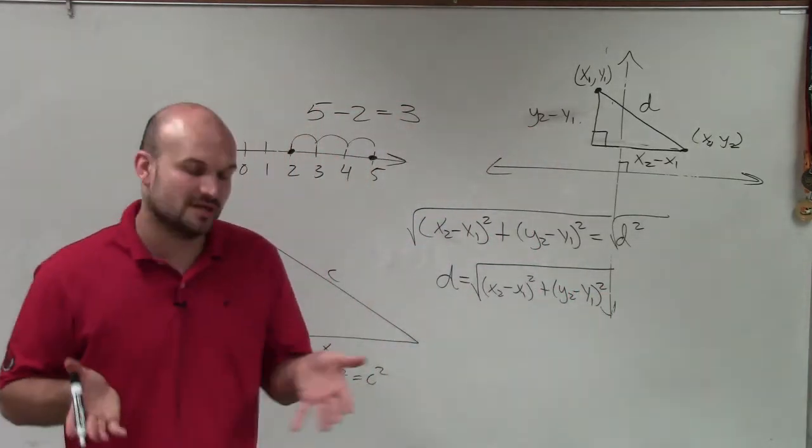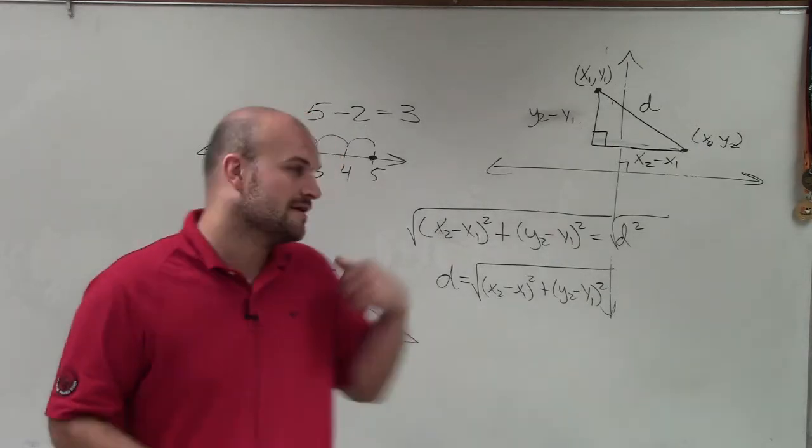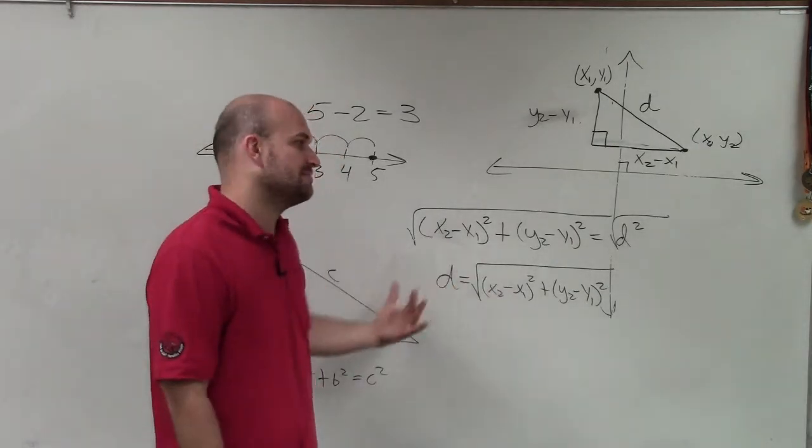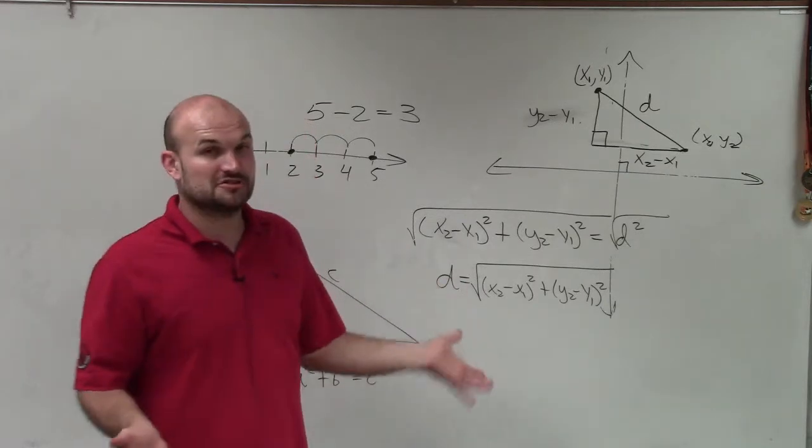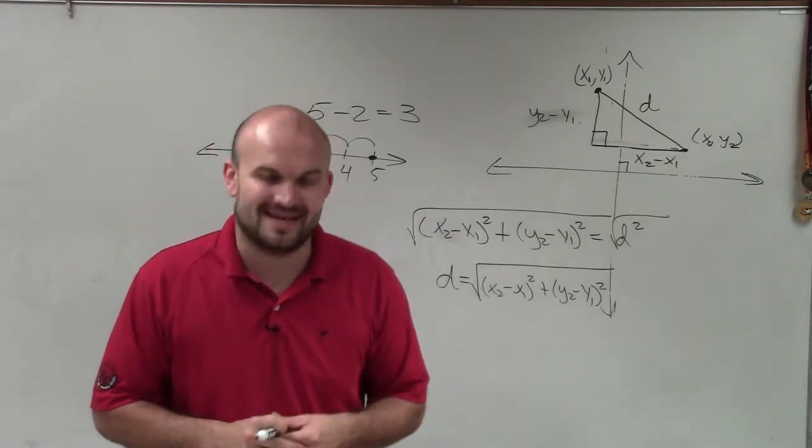And usually when we introduce the square root, it's plus or minus. But since this is d, which is distance, it's always going to be a positive. So there you go, ladies and gentlemen. That is where the distance formula comes from. Thanks.